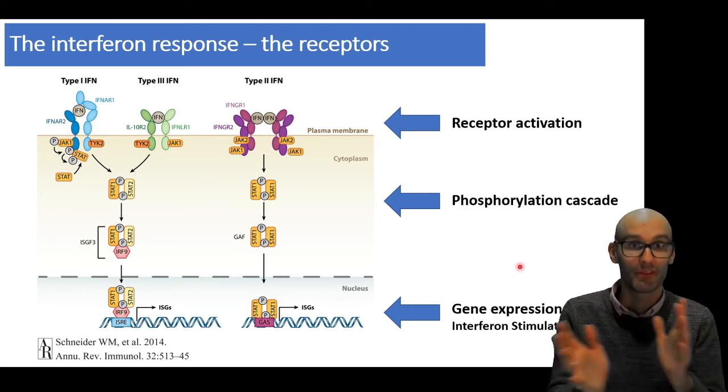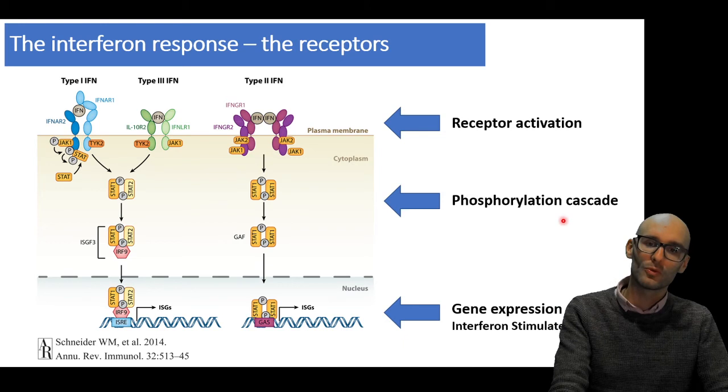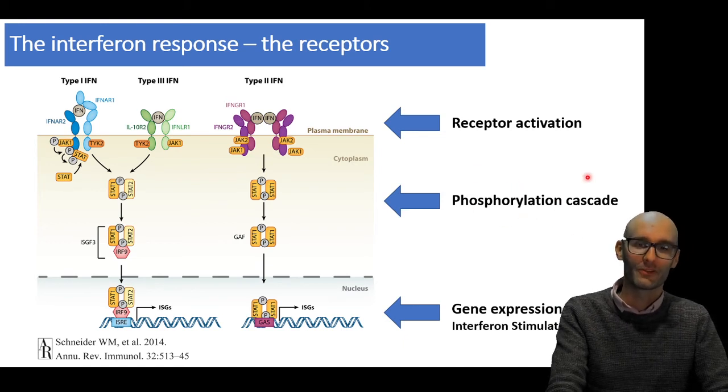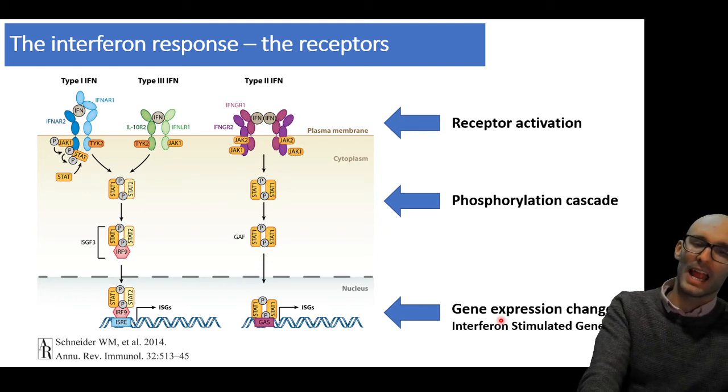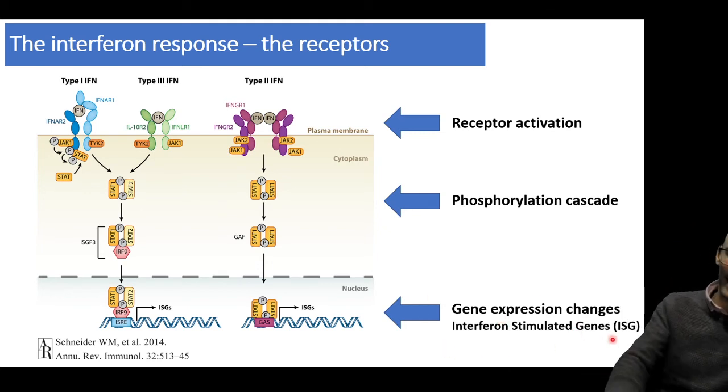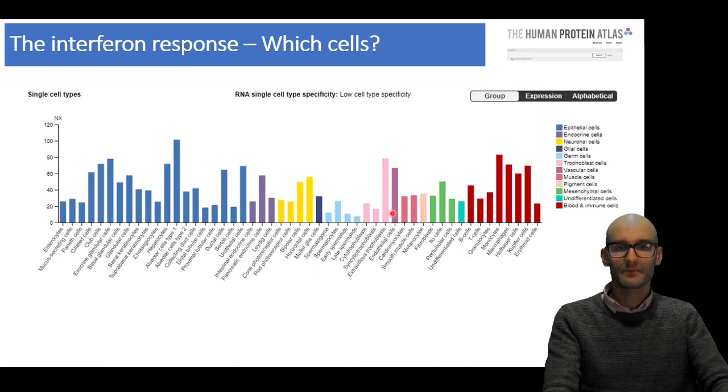They all just initiate a phosphorylation cascade internally. It's often specific for the receptor, the kind of cascade it is, but it's so often just a phosphorylation cascade, which then causes a change in gene expression. And we call these interferon stimulated genes, ISGs.